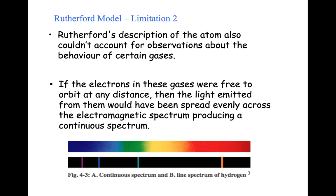Rutherford's description of the atom couldn't account for some of these observations. A second limitation of Rutherford was that if the electrons were actually just hovering around at any distance, then the light emitted from them should be spread evenly across the electromagnetic spectrum and every element should be producing a continuous spectrum just like we saw with the white light. But that was not the case.